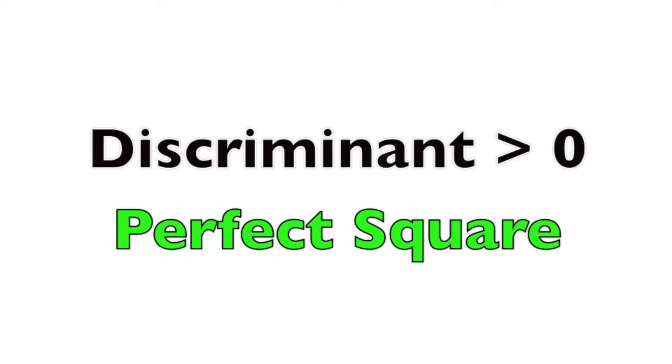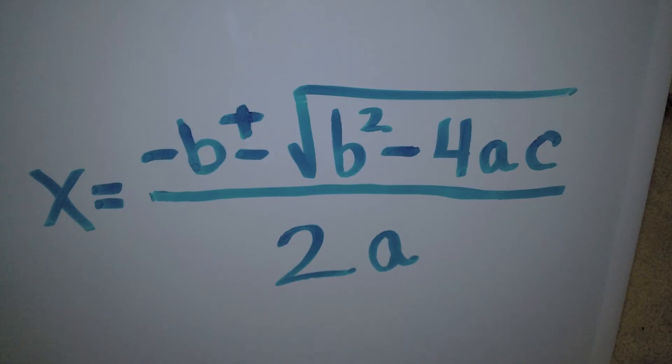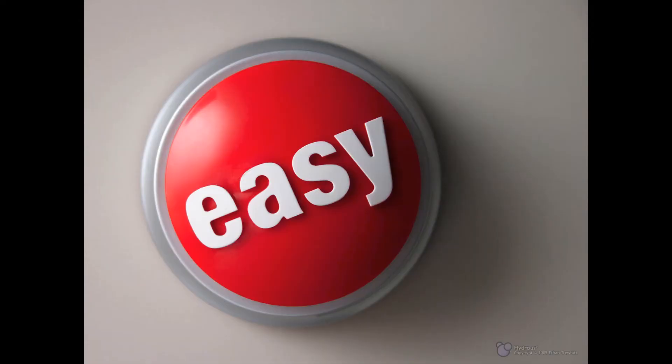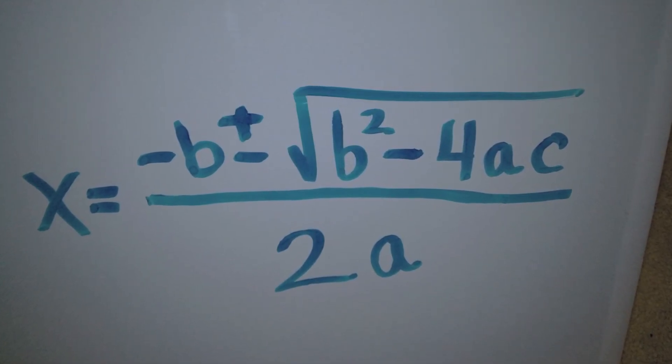Greater than zero and a perfect square? Then rational is what you get. Greater than zero and any other number? Then irrational roots is what you're gonna get there. The quadratic formula is really easy. All you've got to do is start with negative b, plus or minus the square root of b squared minus 4ac, all over 2a. And everybody run into the rhythm now.